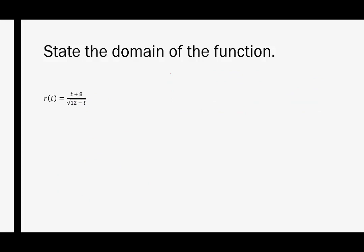In our last example, we have r of t is equal to t plus 8 divided by the square root of 12 minus t. Nothing wrong with the numerator, the numerator is a nice polynomial, a linear function. So we don't have to worry about that. The denominator, we have two issues: we have the radical, and it's also a denominator.